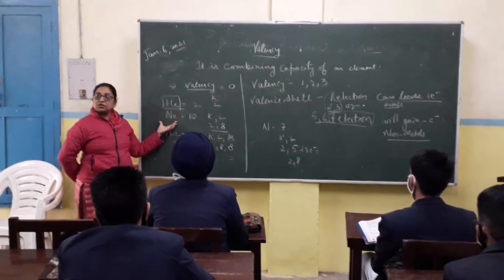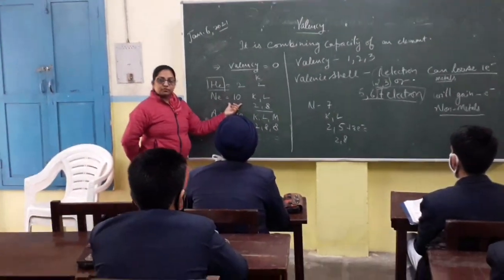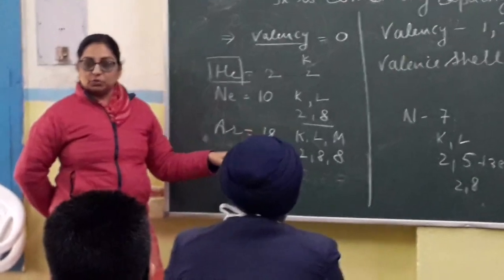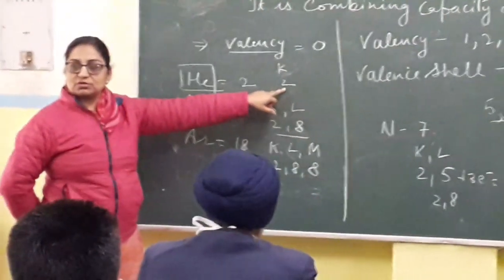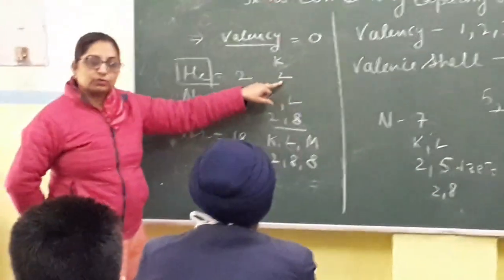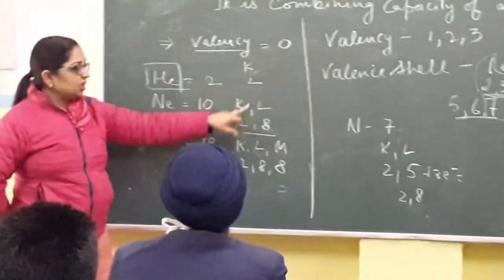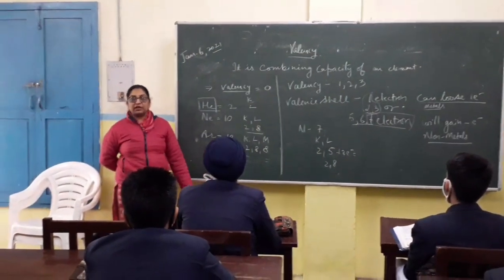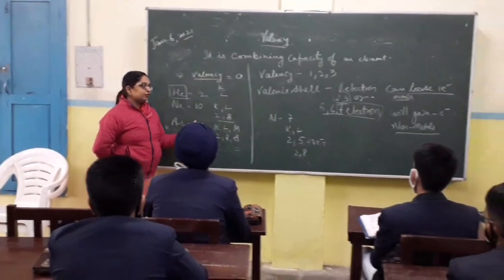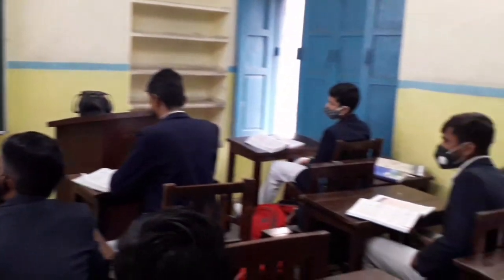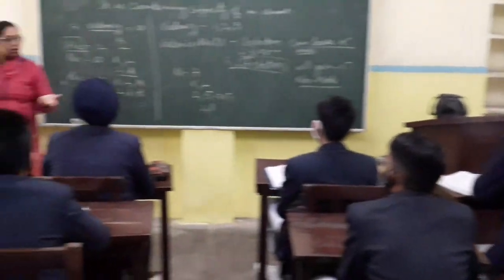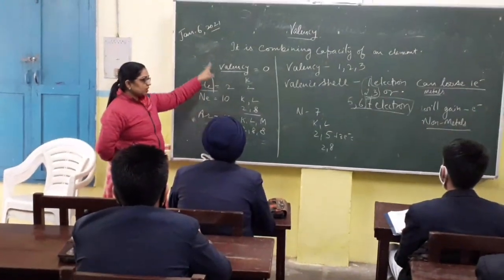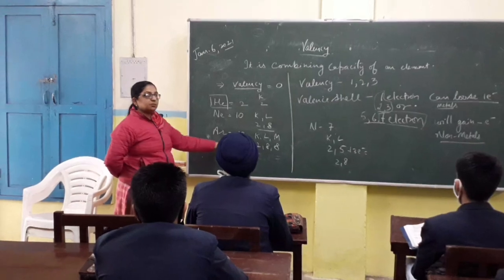Next one is neon. Atomic number is 10. This is its configuration: 2, 8. In the first shell, maximum two electrons could be accommodated — that's why it is following the duplet rule, its duplet is complete. In the outer shell, its octet is complete. It has a fully filled valence shell. Fully filled means they don't require any electron; they are not in the state of losing, gaining, or even sharing electrons. That's why their valency is zero — their combining capacity is zero. The same case applies to argon.